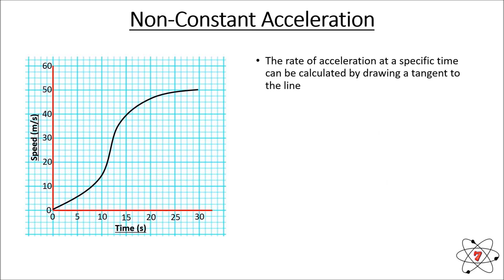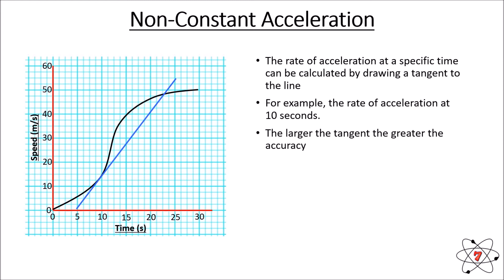The rate of acceleration at a specific time can be calculated the same way we did for the distance-time graph — we draw a tangent to the line. To calculate the rate of acceleration at 10 seconds, I draw a tangent to the line at that point, making it as large as possible to maximise accuracy. I create my triangle and read the values: the change in time is 20 seconds and the change in speed is 55 metres per second. So acceleration at 10 seconds equals 55 divided by 20, which gives 2.75 metres per second squared.